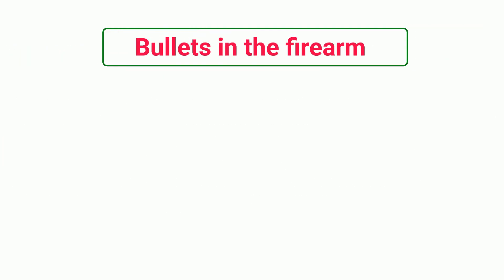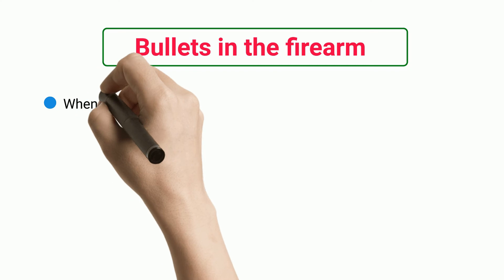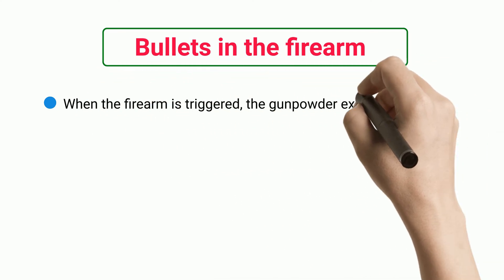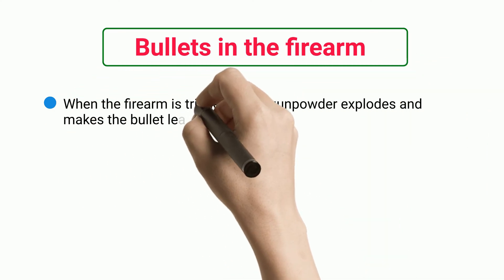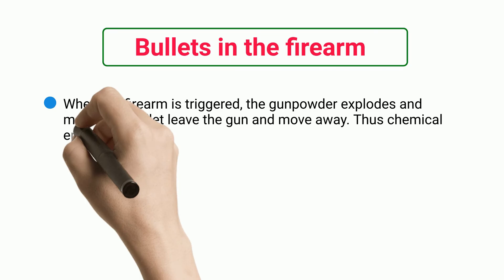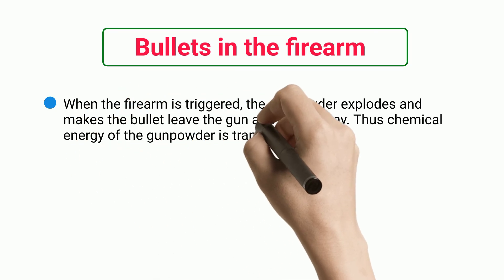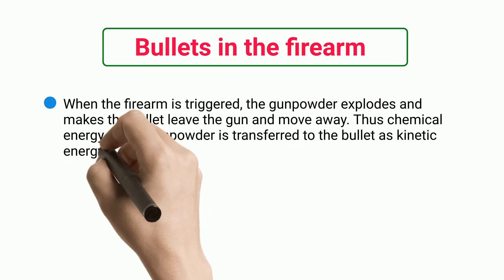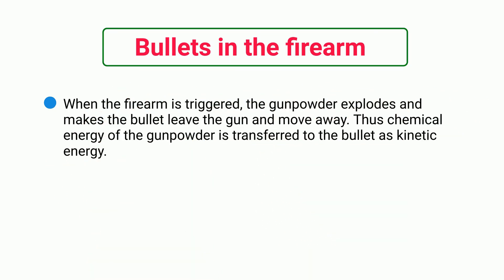Bullets in the Firearm. When the firearm is triggered, the gunpowder explodes and makes the bullet leave the gun and move away. Thus, the chemical energy of the gunpowder is transferred to the bullet as kinetic energy.